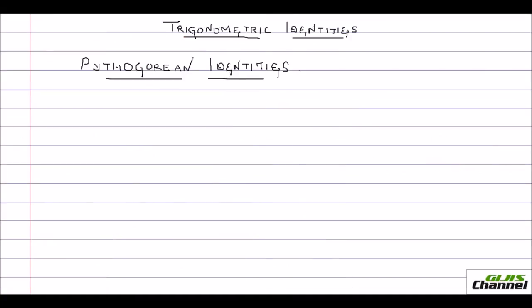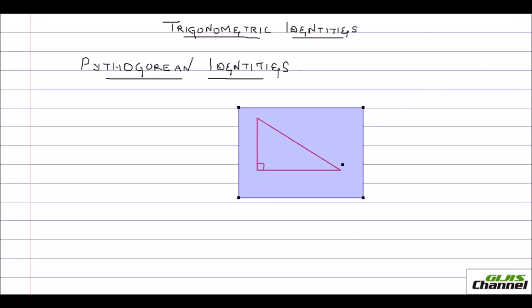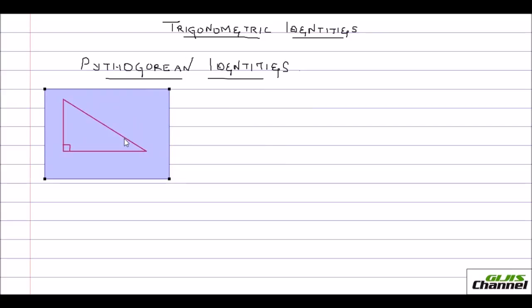Hi all, this is Vasve. Let's learn about trigonometric identities in this video. It would be better if we call them Pythagorean identities, because we will basically be using the Pythagorean formula here. So I just take a triangle here — triangle ABC.